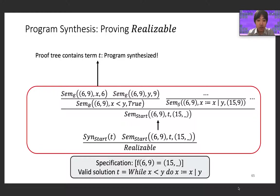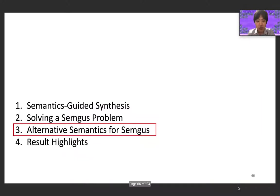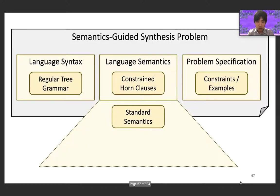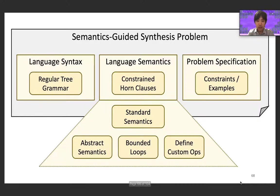Until now, the semantics considered for a language were standard semantics. However, SemGUS gives us the freedom to equip a language with whatever semantics we want, which turns out to be a very interesting and powerful ability. Constrained horn clauses can be used to model any kind of semantics expressible in a big-step operational fashion, including abstract semantics, custom semantics such as one that bounds the number of loop iterations, or semantics defined over custom operators, which one might use to express synthesis problems over regular expressions or other domain-specific languages.